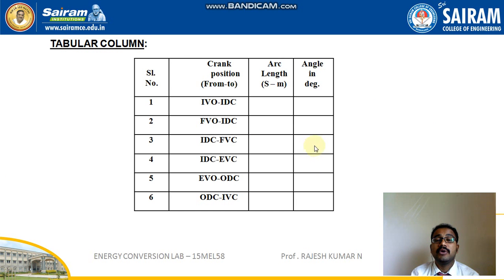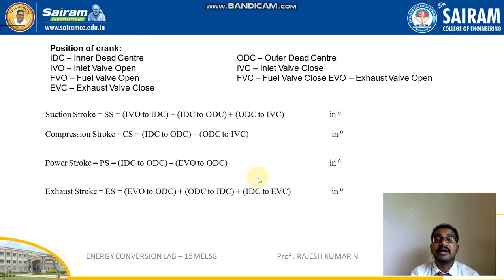A tabular column is shown where the arc length and the angle in degrees are measured for the different crank positions: from IVO at IDC to ODC to IVC, covering the compression stroke crank positions. The crank positions for the suction stroke, compression stroke, power stroke, and exhaust stroke are recorded in the table with their corresponding values. The valve timing diagram is then completed based on these measurements.